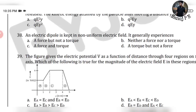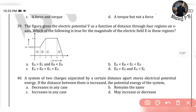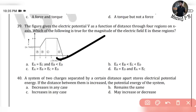39th question: The figure gives the electric potential V as a function of distance through four regions on the X-axis. Which of the following is true for the magnitude of the electric field E in these regions? In region B the field is constant, E_B is less than E_D. Option A is your answer.